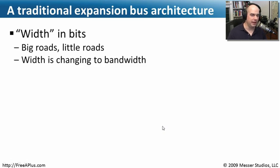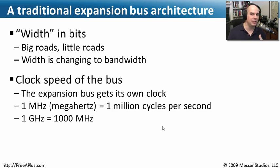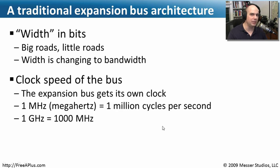When we talk about a bus architecture, we also refer to the size of the bus — a 32-bit bus or a 64-bit bus. That means how much we're able to send down all at one time. The wider the bus, the more we can send through and the more bandwidth we'll get. We also talk about the bus speed — the clock speed. The expansion bus has its own clock, so everything going over that bus runs at the same speed. We refer to these speeds as cycles per second, or hertz. One million cycles per second is one megahertz; 1,000 megahertz is one gigahertz. The higher the hertz, the more information we can push down that bus.